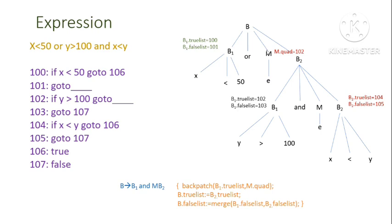For the first tree B1 OR M B2, the true list is {100} and false list is {101}, so the next unoccupied address is 102, giving M.quad = 102. For the second subtree B1 AND M B2, the true list is {102} and false list is {103}, so the next unoccupied address is 104, giving M.quad = 104. Now we apply the transformation rules in a bottom-up fashion.